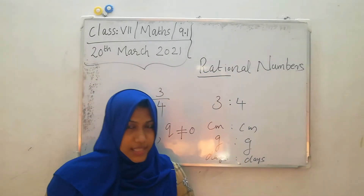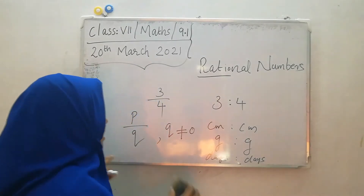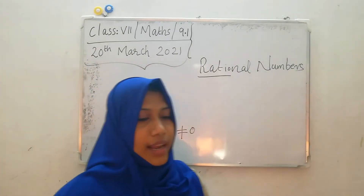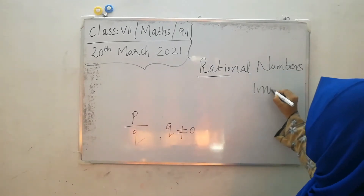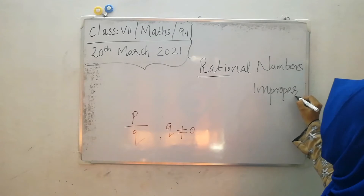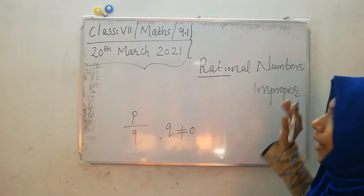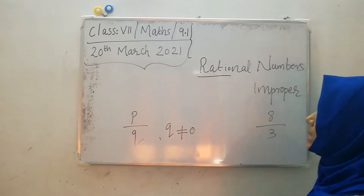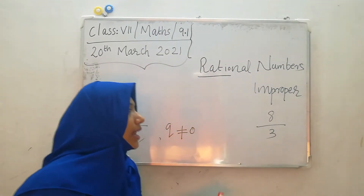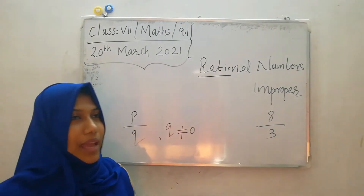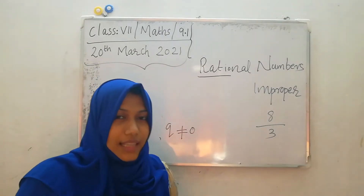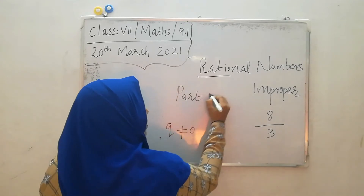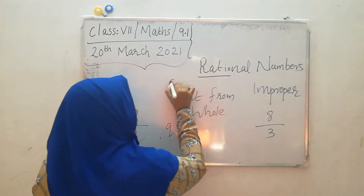You studied types of fractions — different types of fractions. One of them is improper fraction. Can you say the definition of improper? Improper means the numerator is greater and the denominator is smaller. This is not practical in the sense, because fraction is part from whole — that is the definition of fraction.